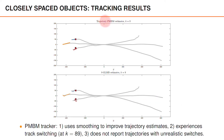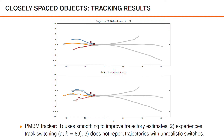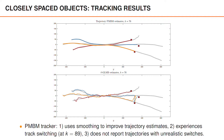In this case, the PMBM tracker uses smoothing to improve the trajectory estimates compared to the delta GLMB estimates. Smoothing may be nice to add, and it's cheap to perform compared to solving the data association problem, at least if you limit how far back you do smoothing. The delta GLMB filter experiences track switches around k equals 75 and reports unrealistic trajectories after that.